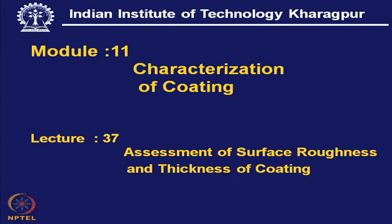Assessment of surface roughness and thickness of coating. These are the two outcomes of a deposition process. With passage of time, we expect certain growth of the coating, and at the same time, the surface feature of the coating can be very rough, very smooth, or it can have different morphology with non-uniform unevenness in the surface, and that may happen because of various reasons.